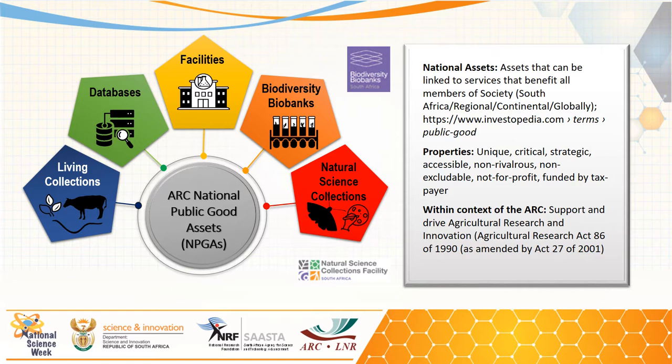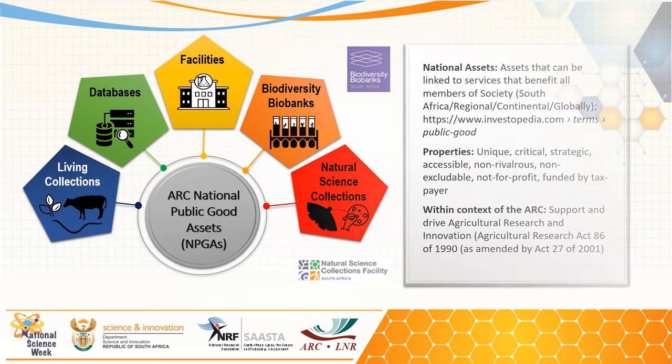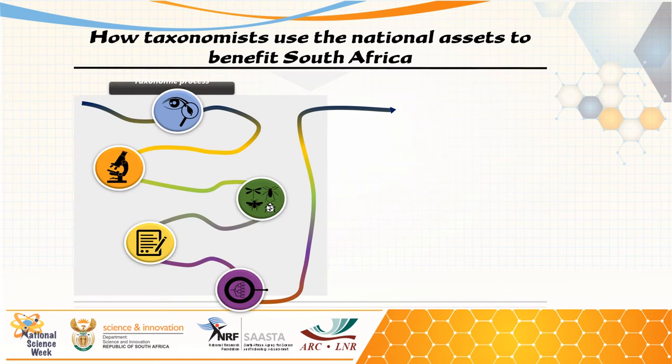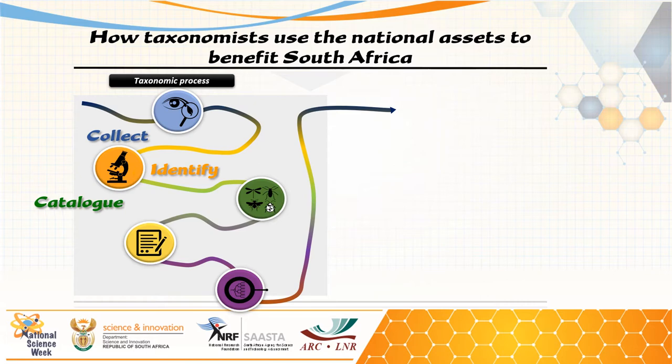There are a number of different types of national assets. It ranges from living collections, databases, facilities, biodiversity biobanks, and the natural science collections. The national assets we will look at today will be the natural science collections that are housed at the Agricultural Research Council Plant Health and Protection.